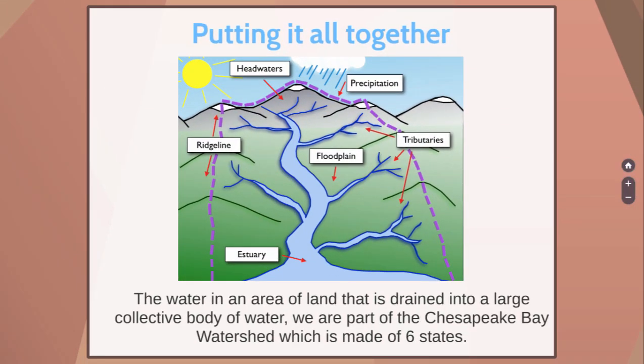When you put this all together, that's what makes up a watershed — water in an area of land drained to a large collective body of water. You start from the top where our divide, made of ridgelines and mountaintops, and the water moves down through tributaries and rivers, through floodplains, through wetlands and estuaries, and eventually out to a larger body of water like a lake, which makes its way out to the ocean. We in Woodbridge and the state of Virginia are part of the Chesapeake Bay watershed — a really big watershed containing six states around us — and that Chesapeake Bay area feeds out into the Atlantic Ocean.